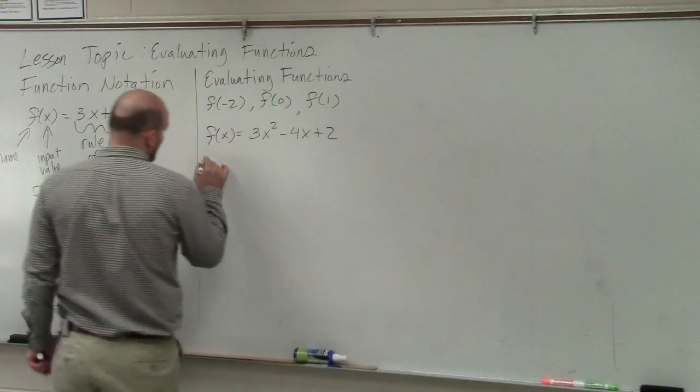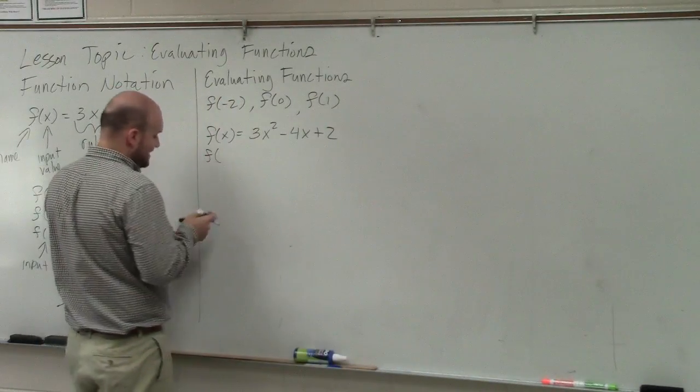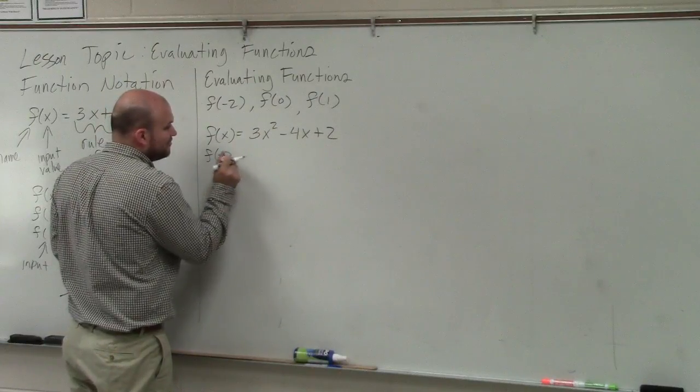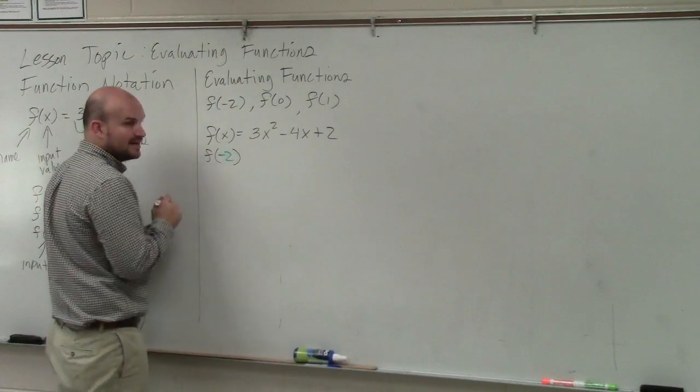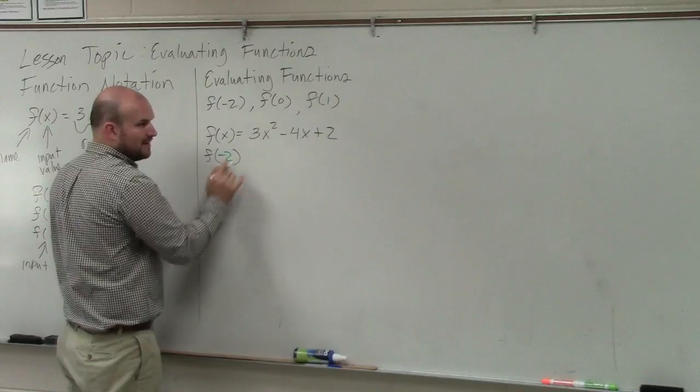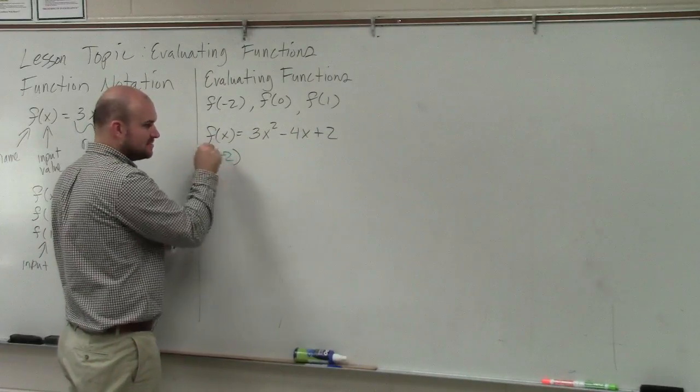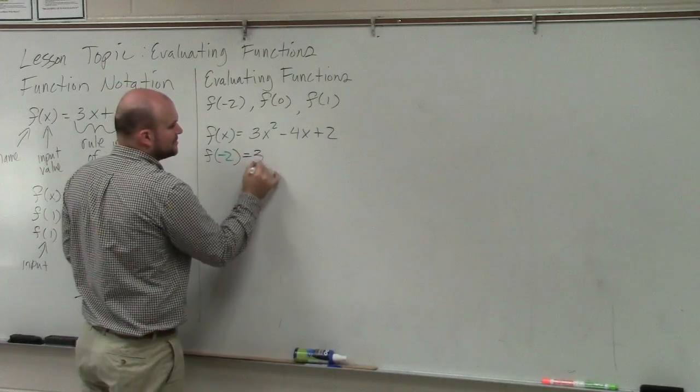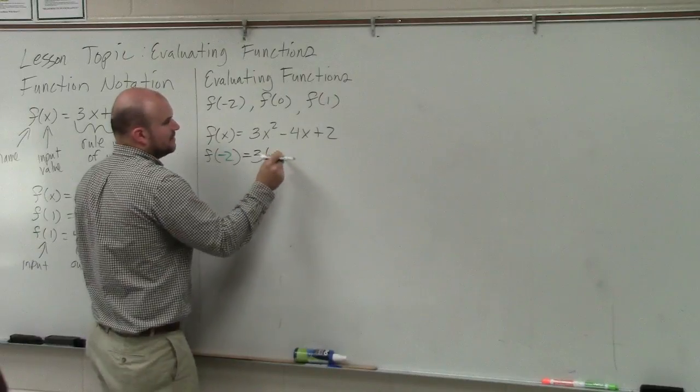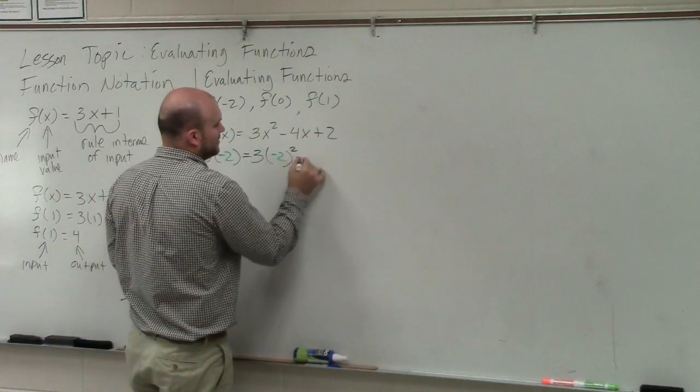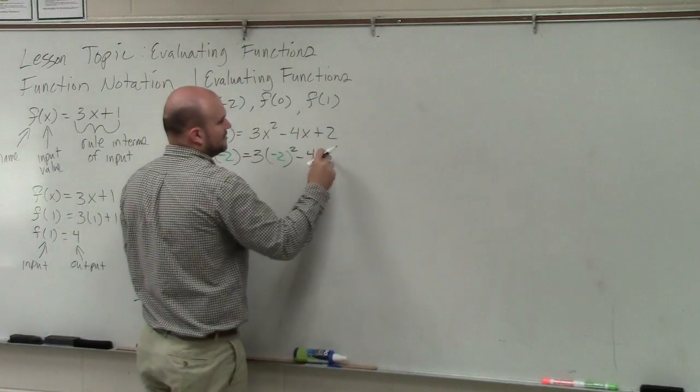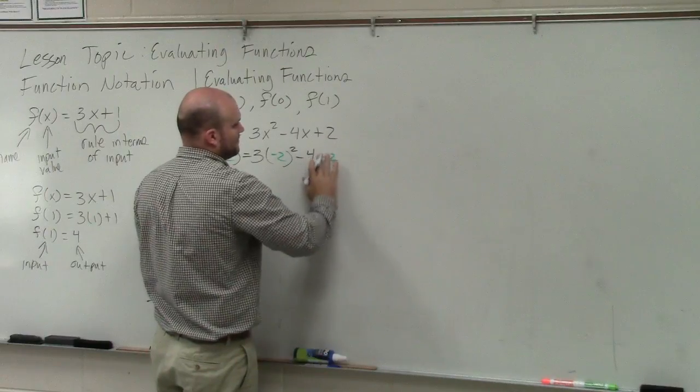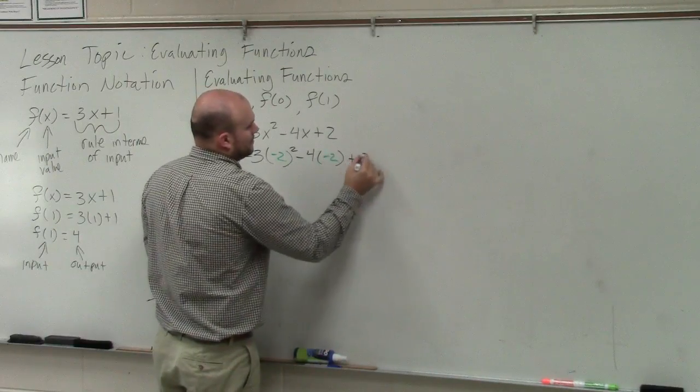So if we want to evaluate for f of negative 2, if we're going to change our input value from x to negative 2, then in our rule we're going to replace every single time we see an x with our value negative 2. So it's going to be 3 times negative 2 squared minus 4 times negative 2 plus 2.